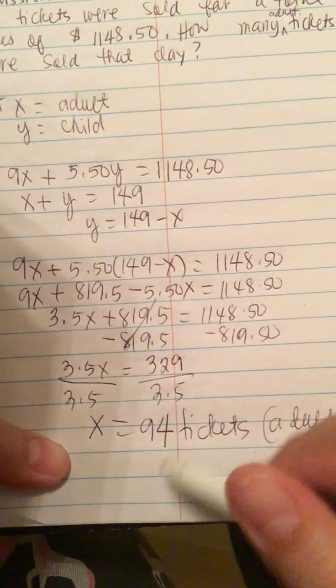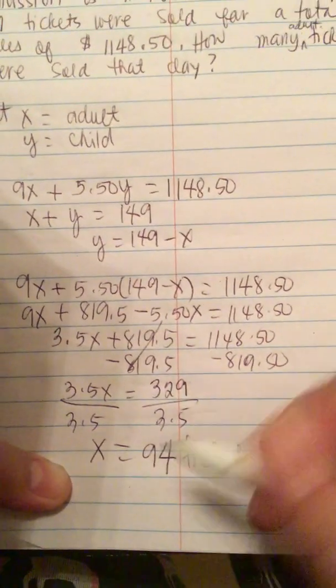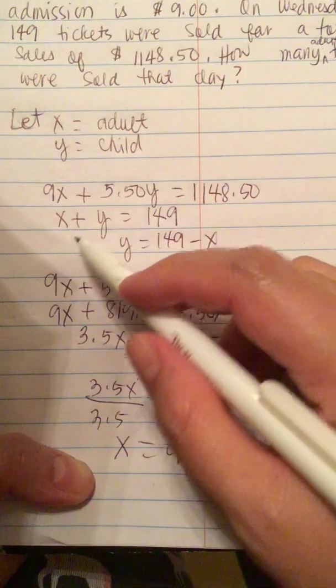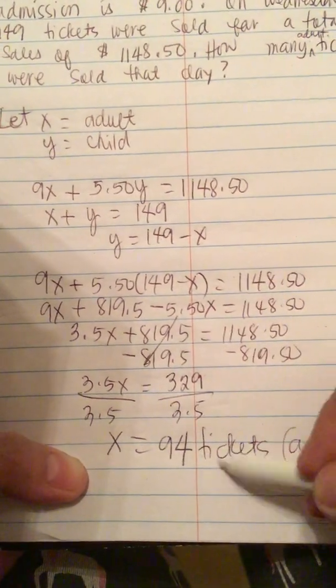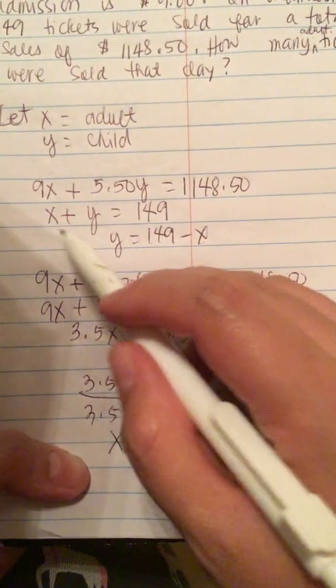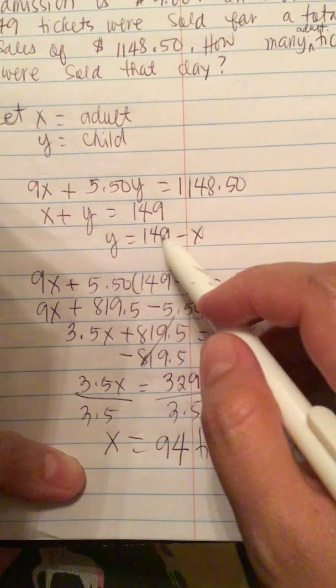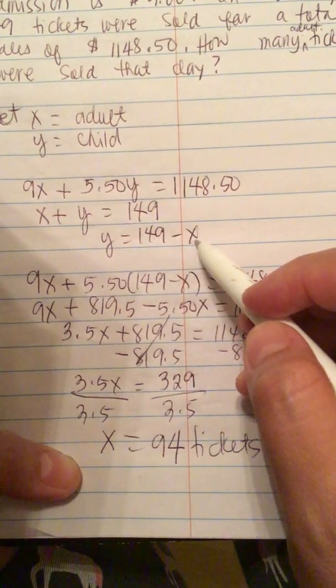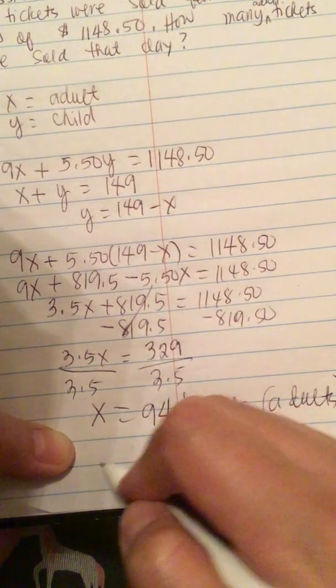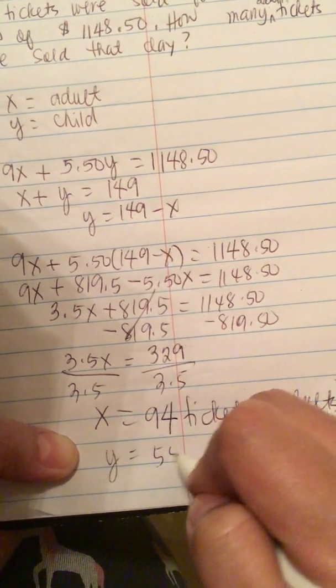If you want to know how many children's tickets were sold, you just have to plug in 94 for X. 149 minus 94 is 55, so Y equals 55.